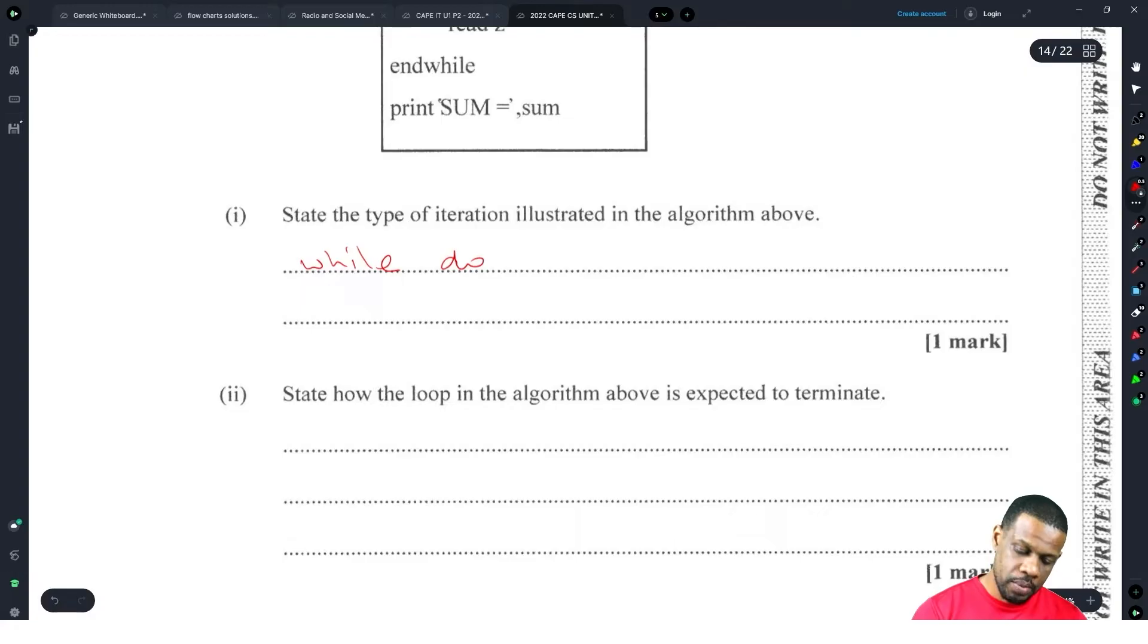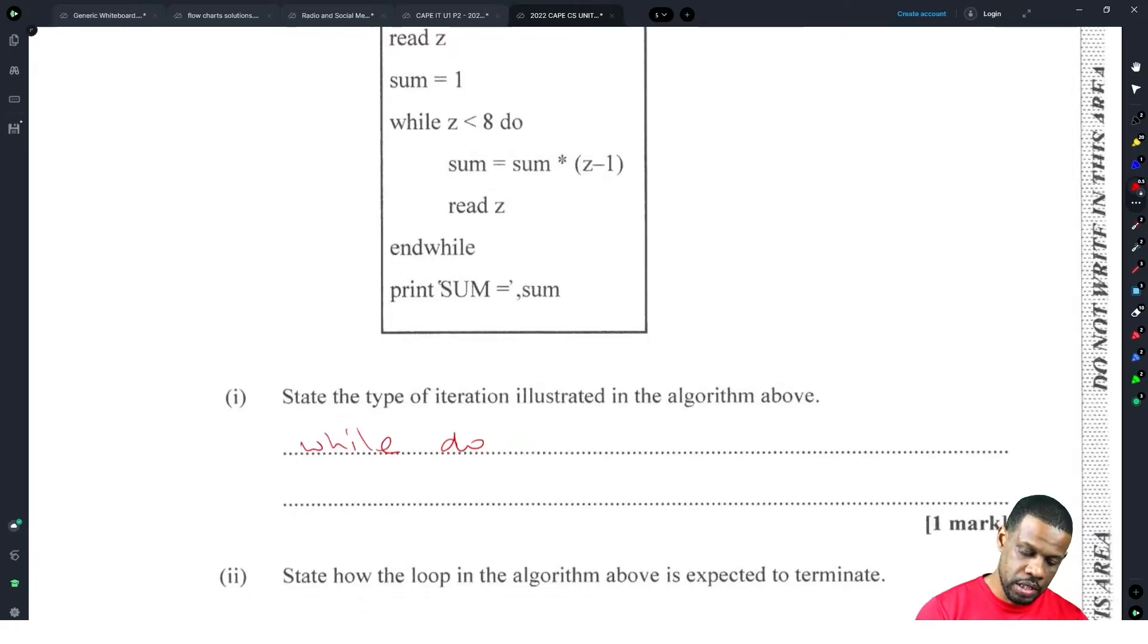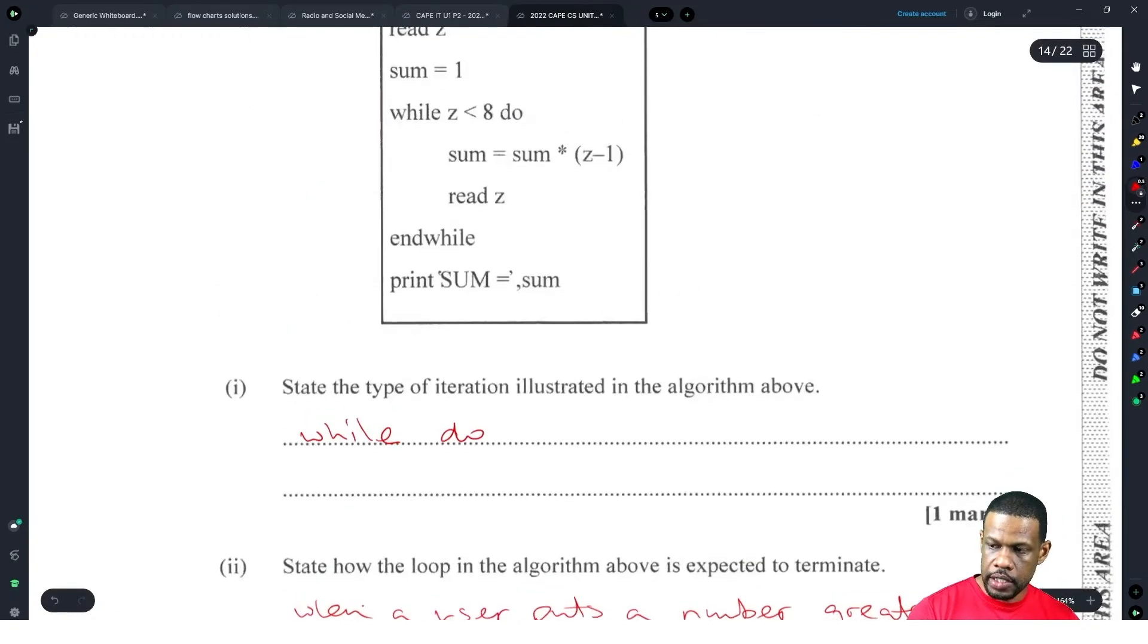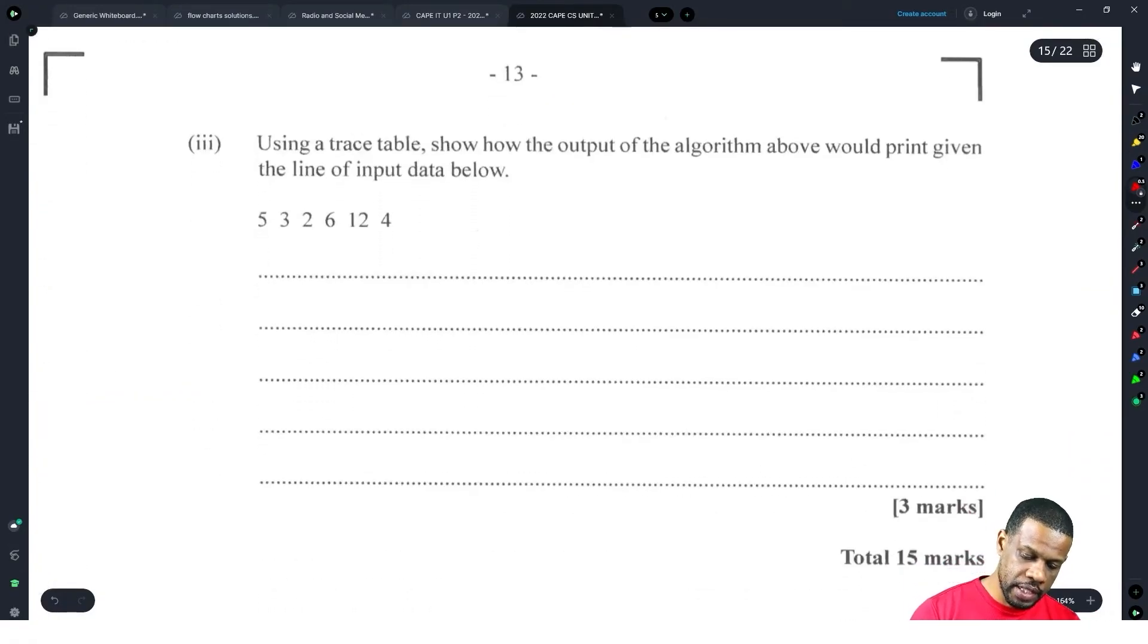Alright, read the algorithm below and answer the questions that follow. State the type of iteration illustrated in the algorithm above. Type: while do. Yes, this module 2 is insulting to your intelligence though. I find this is insulting to your intelligence. State how the loop above is expected to terminate. It is expected to terminate when the user puts a number greater than eight. I'm not writing out a sentence now. I'll put when a user put a number greater than eight.